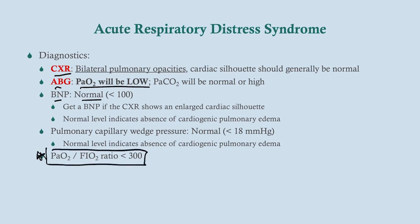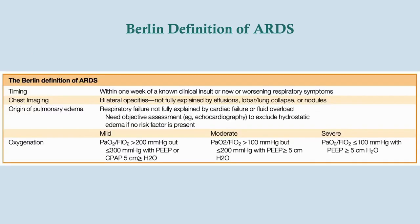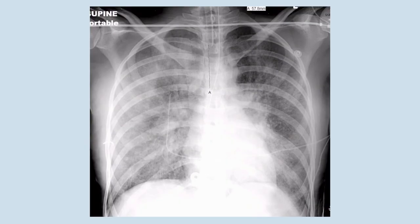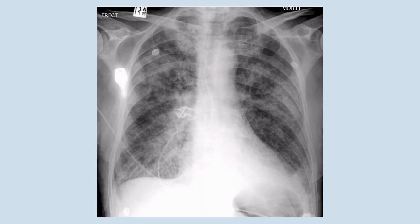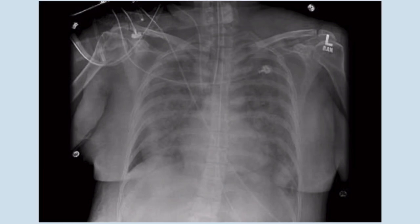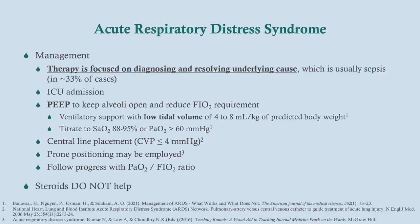This is the Berlin definition of ARDS — it covers chest imaging, the origin of the pulmonary edema, and the PaO2 to FiO2 ratio. On the chest radiograph, notice how the cardiac silhouette is roughly normal in size, while you see bilateral pulmonary opacities. In another example, it can be difficult to visualize the cardiac silhouette when you have significant opacities.